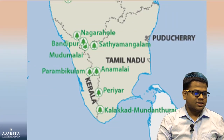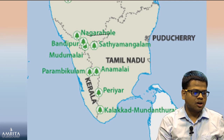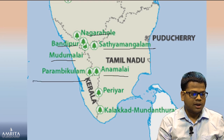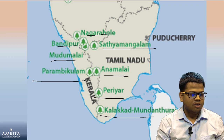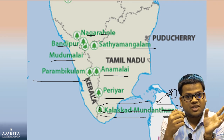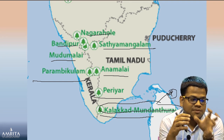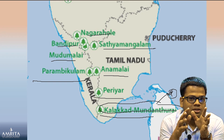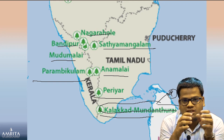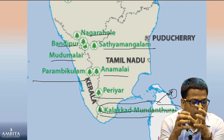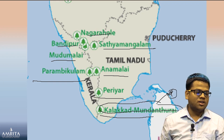First, we will see a snapshot of the Tiger Reserves: Nagarhole, Bandipur, Mudumalai, Satyamangalam, Parambikulam, Anamalai, Periyar, and Kalakkad-Mundanthurai. These names may be difficult, especially for students from North India, but we should have sensitivity and try to learn these names — they are just as significant as Jim Corbett. These are Southern Indian names and we should respect that.